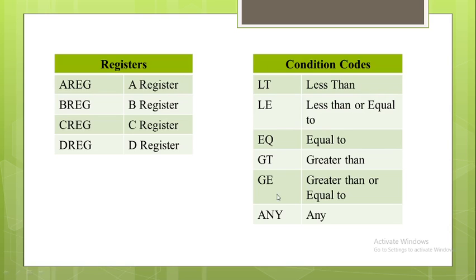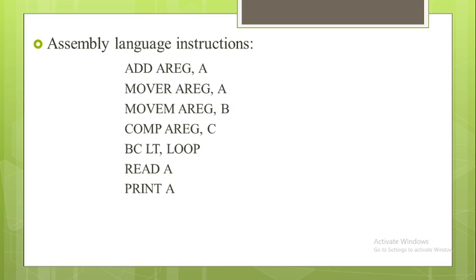Operand 2 refers to the memory address using the symbolic name. Now we will see some examples of assembly instructions. The first instruction is ADD A, Register A, which adds the content of A into Register A — the mnemonic opcode is ADD, operand 1 is register A, and operand 2 is A. The second instruction is MOVER A, Register A, which moves the content of A into Register A.